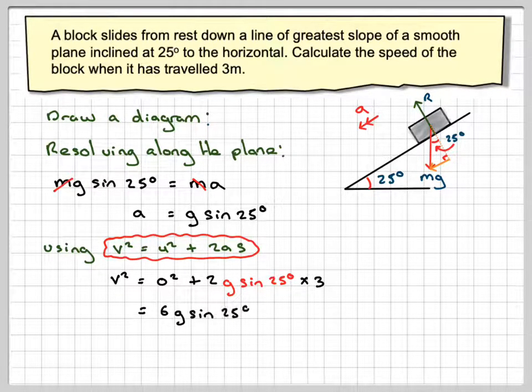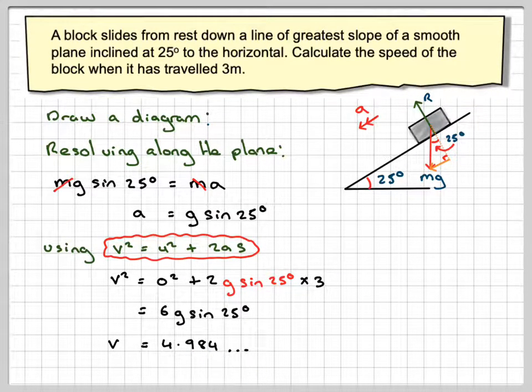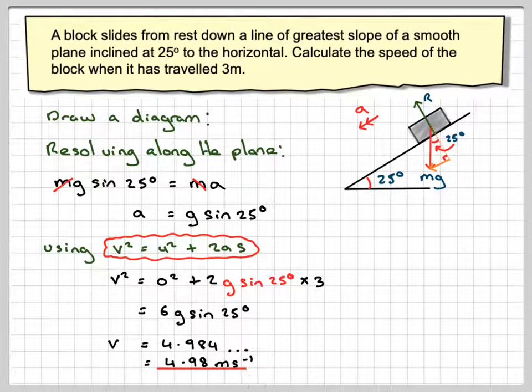And that gives me that v squared is going to be 6g, 3 times 2, 6g sine 25. In order to find v, we need to take the square root. That will give me 4.984, which is 4.98 metres per second.